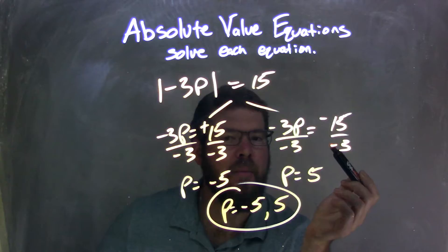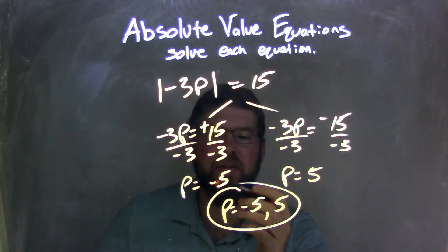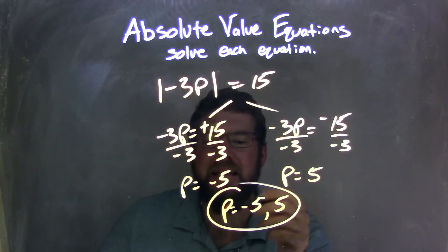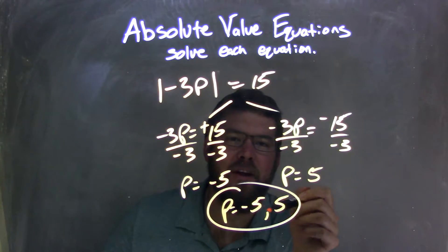Remember, a negative divided by a negative is a positive. And so when there are two answers, negative 5 and 5, I wrote it in one final statement from the least to greatest. P equals negative 5, comma, 5.